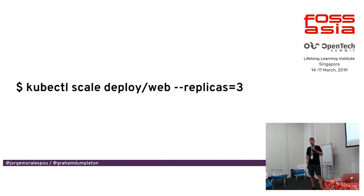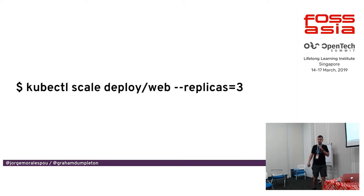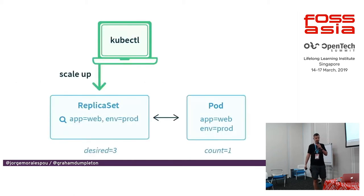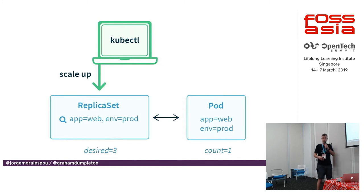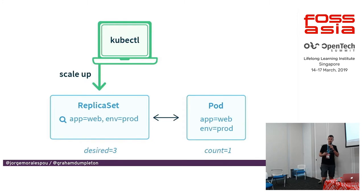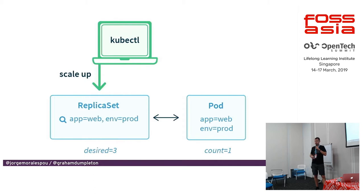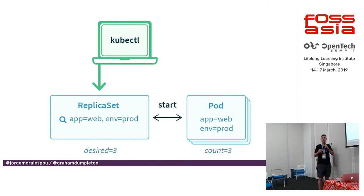Scaling stateless applications on Kubernetes is really easy. You just need to run a single command like kubectl scale, the name of your deployment, the number of replicas you want, and the platform will take care of it. A controller monitors the desired state you want — in this case three replicas — looks at the actual state of the cluster — one replica — and then scales your application to three.